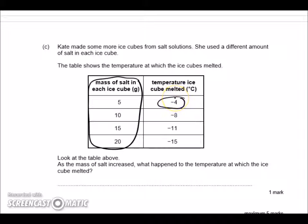She finds out that the 5 gram melts at negative 4 degrees Celsius and the 20 melts at negative 15. So as the mass of salt increased, what happened to the temperature at which the ice cube melted? The temperature decreased. We're looking for patterns, we're describing a pattern.